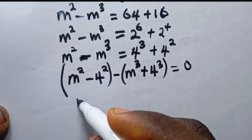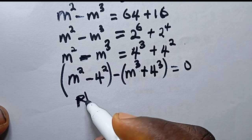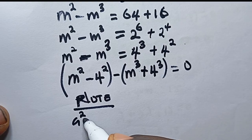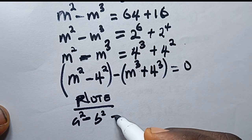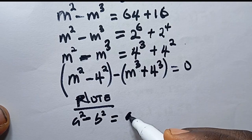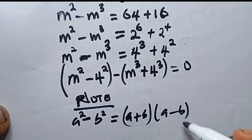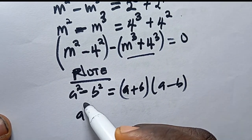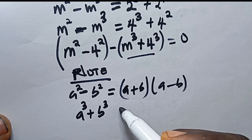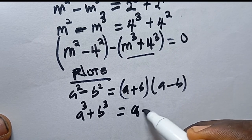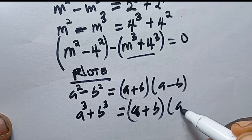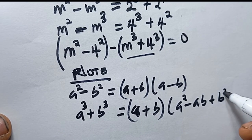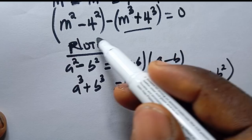Let me remind you of some algebraic identities I'll be using. If you have a² minus b², the difference of two squares, you can expand this as (a + b)(a − b). And if you have a³ minus b³, you can expand it as (a + b) times (a² minus ab plus b²). These are the rules I'm going to use to expand the two brackets.